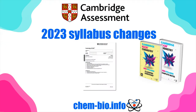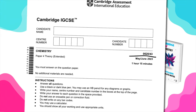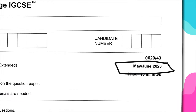Hello everyone. Today we're going to talk about the changes in the IGCSE syllabus for the Cambridge exam board. Cambridge has changed the syllabus for all three sciences: biology, chemistry, and physics. These changes are applicable for the exams starting from the year 2023, so if you're taking your exams in May or June 2023, all of the changes I'm going to talk about right now will be applicable to your exams.